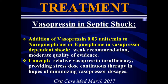Vasopressin is a great agent — your hypothalamus releases it in the setting of shock. When you're completely depleted, your body needs the maintenance stress dose of vasopressin. That's why 0.03 units per minute is the dose. They've looked at titrating it up and found they were killing more people, so it's fixed at that maintenance stress dose.